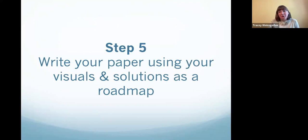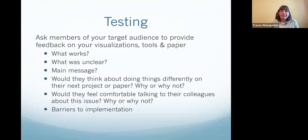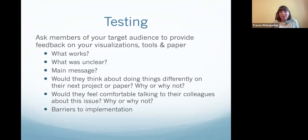Step five is to write your paper using your visuals and solutions as a roadmap. We always do our visuals, text boxes, and tables first, then write the paper afterward. This makes life much easier — you use the text simply as a way of connecting the different visuals that explain complicated concepts. In terms of testing, ask members of your target audience to provide feedback on visualizations, tools or solutions, and the paper: What works? What was unclear? What did they think the main message was? If they came away with a different message, adjust things.